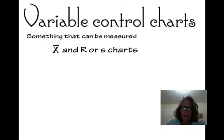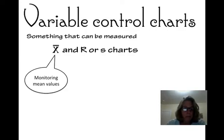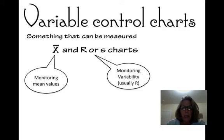Something that can be measured is like inches or microns or grams, something that you can actually have a measurement designed as a continuous variable. Generally there's two types of variables. One is a control chart that measures the mean value, which is an X bar chart. The other is a control chart that measures some sort of variability in the samples, and there's two kinds of those, the R and the S. Generally we use an R chart. The X is for monitoring the means, and the R and the S is for monitoring the variability.